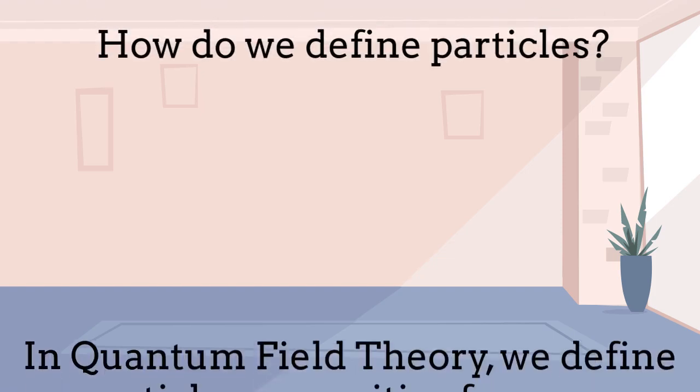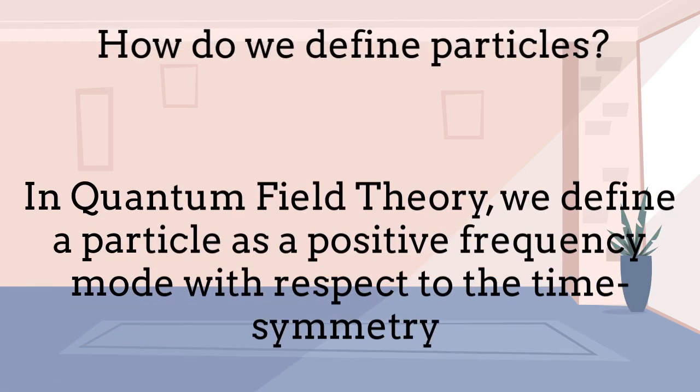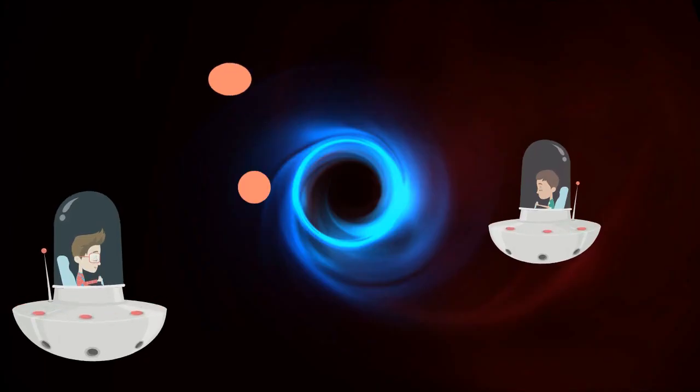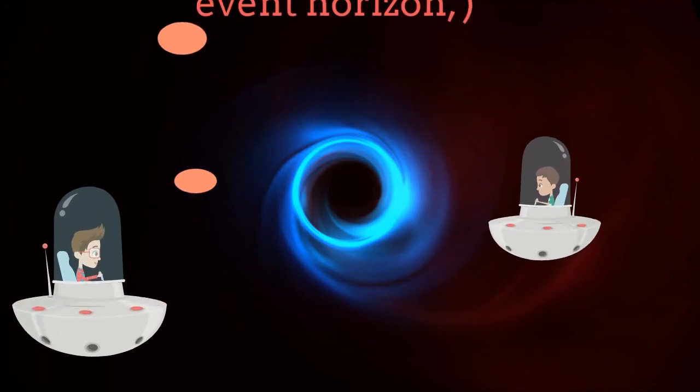But how do we define a particle? In quantum field theory, in a flat space-time, we define a particle as a positive frequency mode with respect to the corresponding time-symmetry translation.